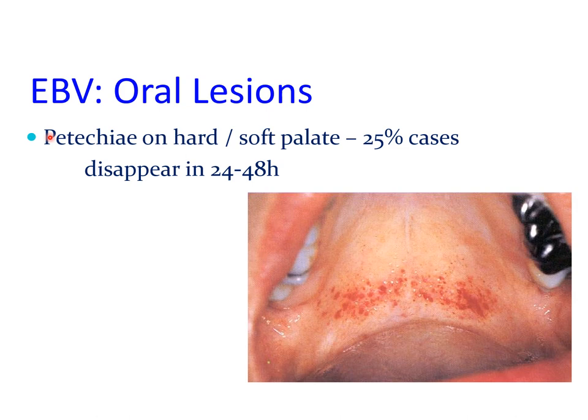Infectious mononucleosis may also present with intraoral lesions, and the most well-recognized form of intraoral involvement is the presence of pinpoint hemorrhages in the soft palate and hard palate region. These may be present in 25% of cases, but they do disappear within up to 48 hours after the infection.